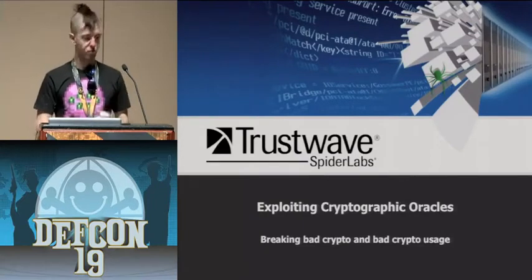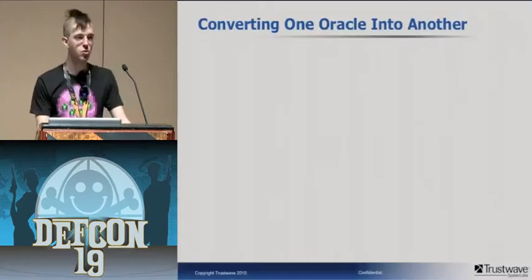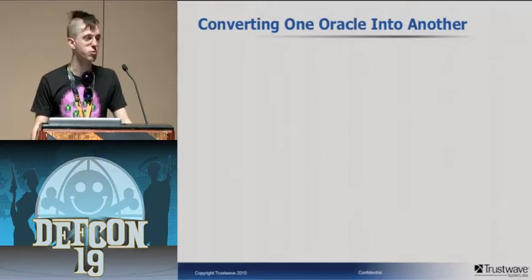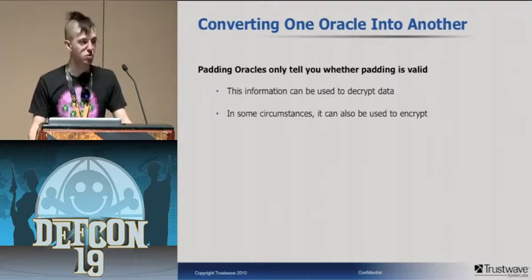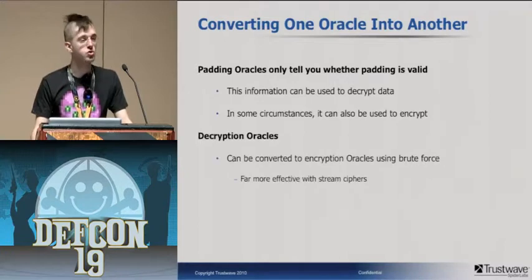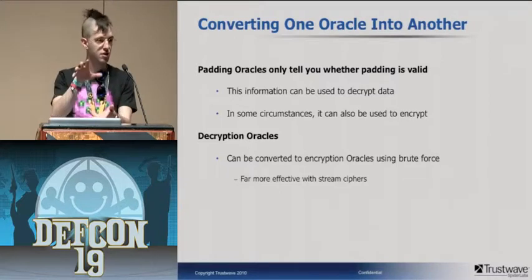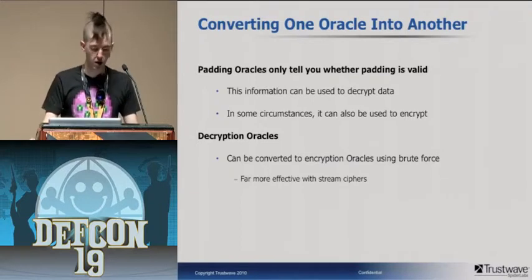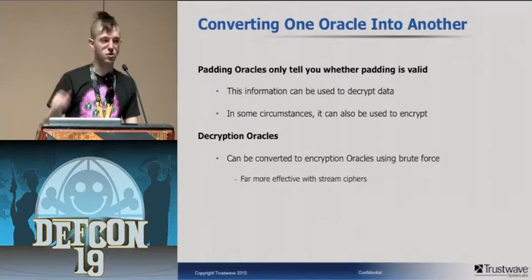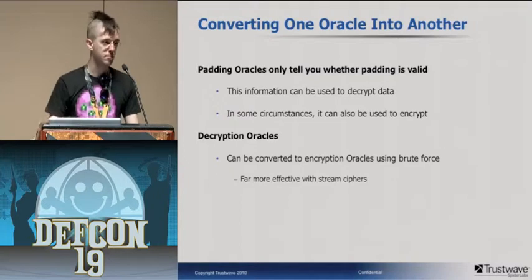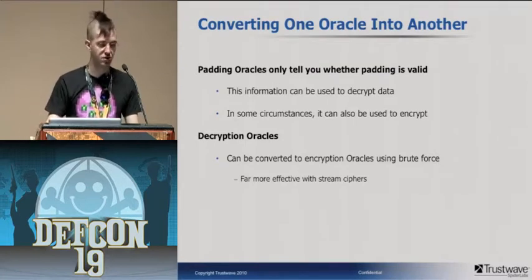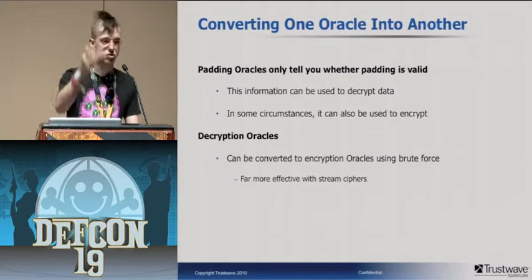To convert one oracle into another, most of it involves brute forcing. Decryption oracles can be converted to encryption oracles: you brute-force-guess cipher text until it decrypts to what you want, so you have the plaintext you want. Since block ciphers do this several characters at a time, you need to guess all characters in that block simultaneously. With stream ciphers, that's one byte at a time — you can guess one bit at a time until you get exactly what you're looking for. Encryption oracles can likewise be converted to decryption oracles in a similar way.